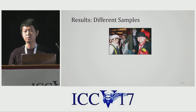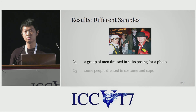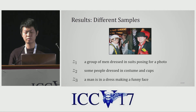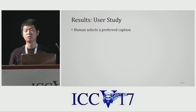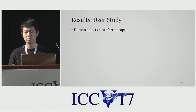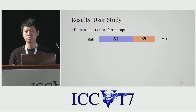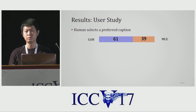For a single image, we can sample different Z values to get different captions covering different details of the original image. Those captions are semantically similar but have large variance in terms of syntax. Since evaluation metrics such as BLEU and CIDEr are not designed for evaluating semantic qualities, we use user studies to compare different methods. Users are asked to select the better one from pairs of captions. Compared to models trained using MLE, the same model trained using GAN wins 61% of the time, indicating it produces better captions.